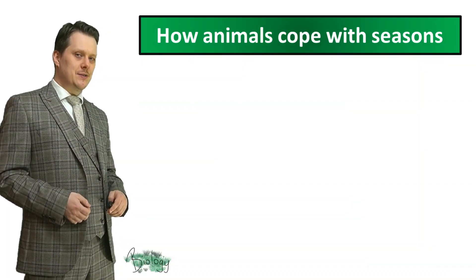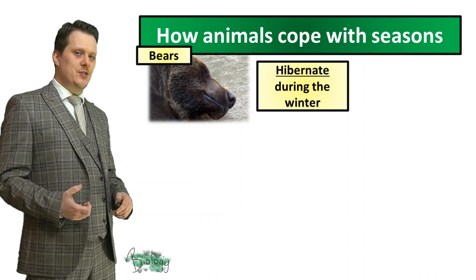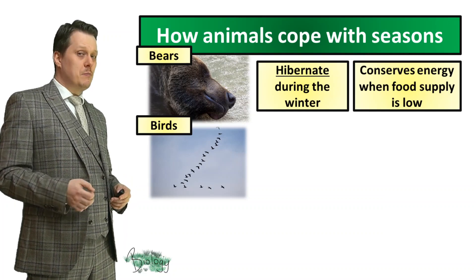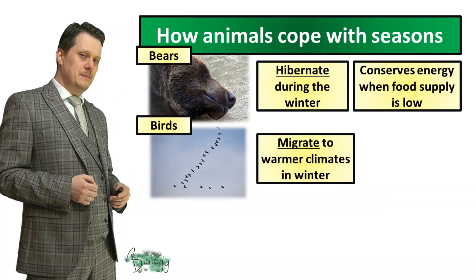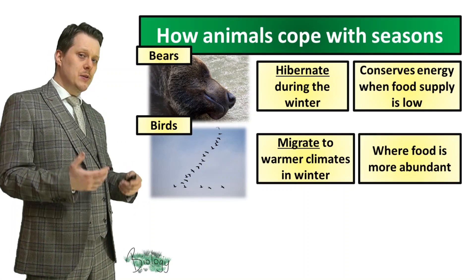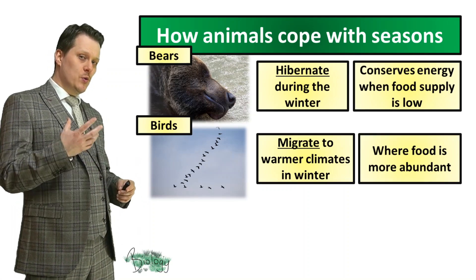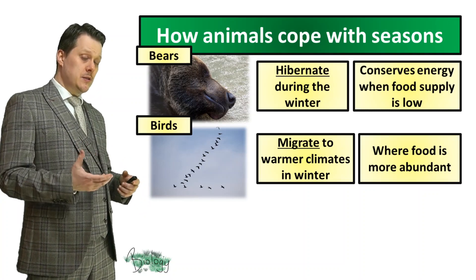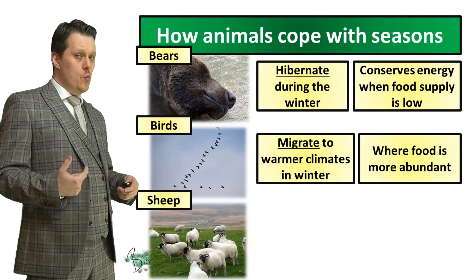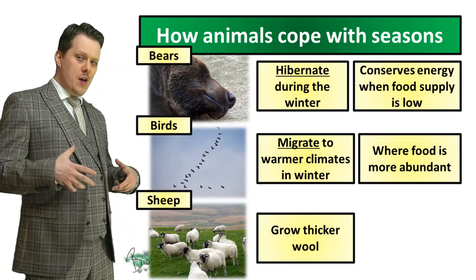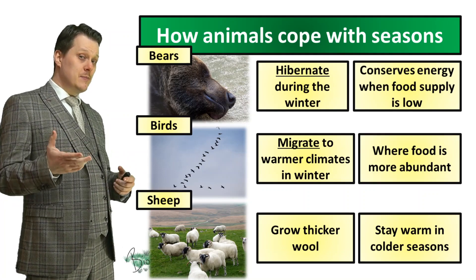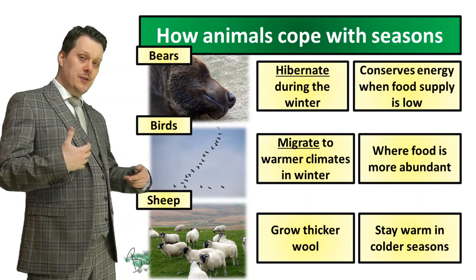But how do animals cope with the seasons? Animals like the bear will go into a state of hibernation, which conserves energy when food supplies are low. There are some birds, like geese, which migrate from a cooler climate to a warmer climate. This is not just about moving to a place with a higher temperature — it's also about moving to a place with a higher abundance of food, because in cooler places the small rodents they eat could be in hibernation and none of the trees are going to be providing fruits. Then we've got animals with a lot of fur or wool, like sheep. In the winter months they grow thicker wool or thicker fur, which allows them to stay warm in the colder seasons. Some animals will also shed their fur in the warmer months so that they don't overheat.